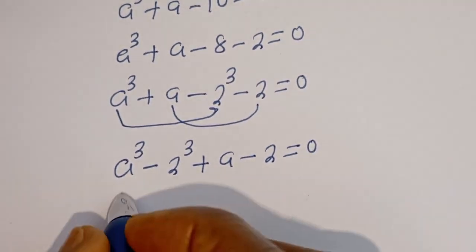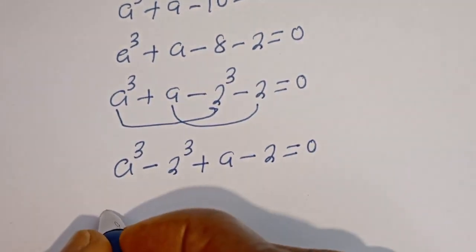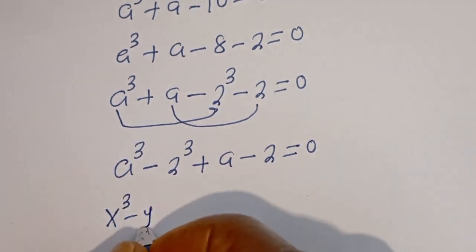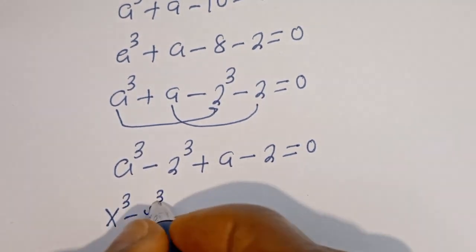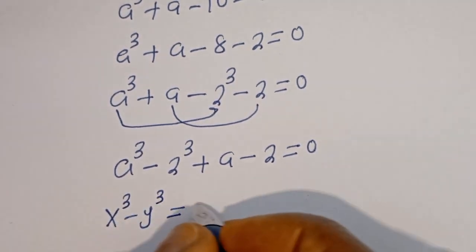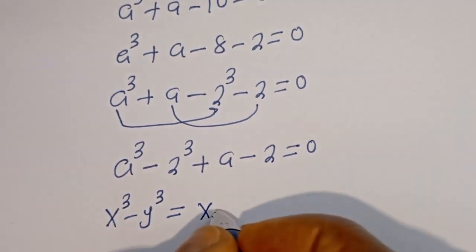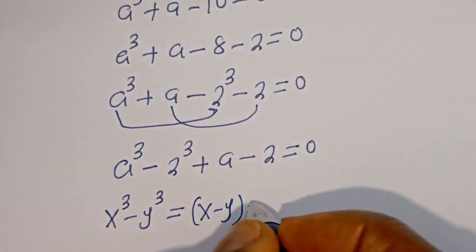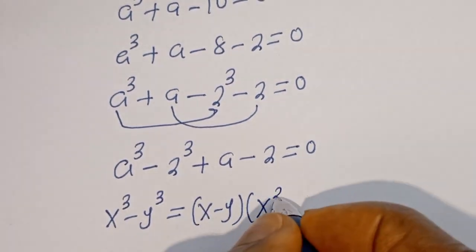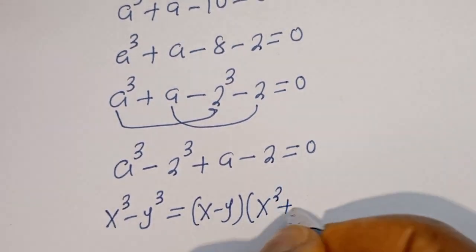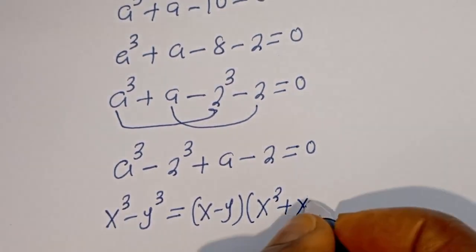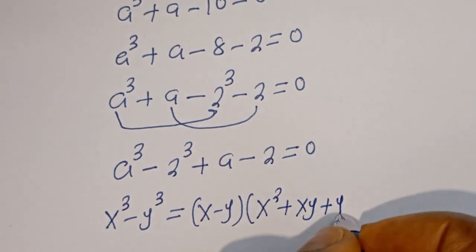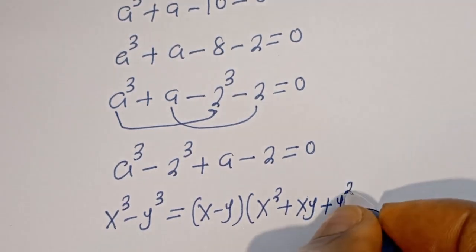Now take note of this: if you have A to the power of 3 minus Y to the power of 3, this is equal to (A minus Y) times the bracket (A squared plus A·Y plus Y squared).